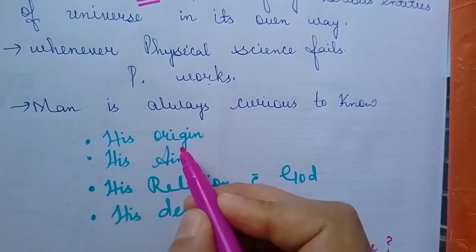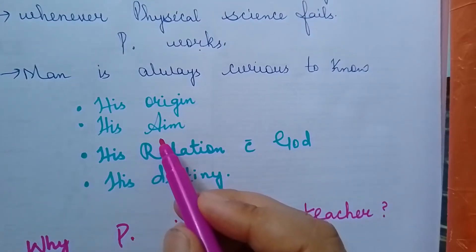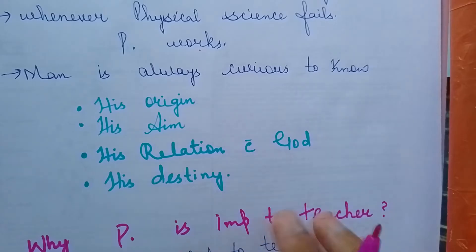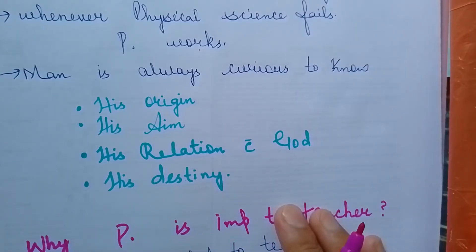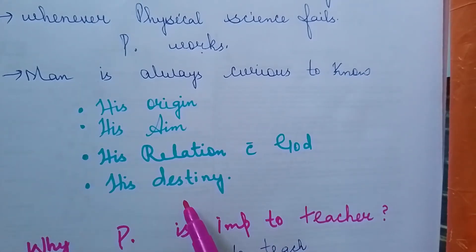His origin - where did he come from? His aim - what is the meaning of coming to this world? His relation with God - what is his relation with Allah, Bhagwan? His destiny - where does he ultimately have to go?